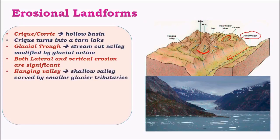Hanging valleys are simply valleys present for smaller tributaries. The major tributary valley is an extended U-shaped one, whereas the hanging valley is also U-shaped but situated at a higher terrain compared to the main glacial trough. Hence this is called a hanging valley.